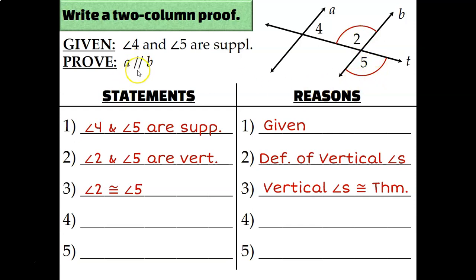Remember what I'm trying to prove — that A and B are parallel. I need to show corresponding angles, alternate interior, alternate exterior angles are congruent, or consecutive interior angles are supplementary. The only special pair from those options that appears on my diagram is consecutive interior angles: angle 4 and angle 2 are consecutive interior. So if I could prove that 4 and 2 are supplementary, I can show A and B are parallel. All I know is that 2 and 5 are the same, and 4 and 5 are supplementary.